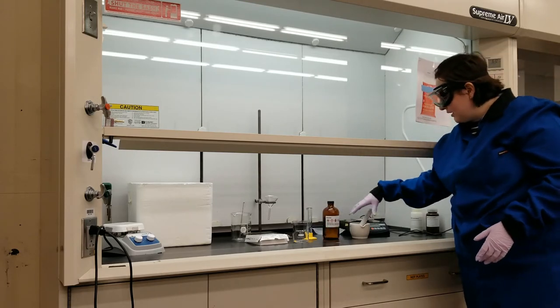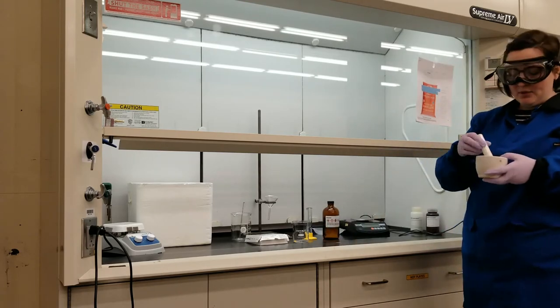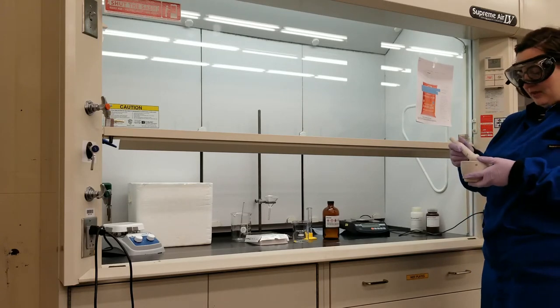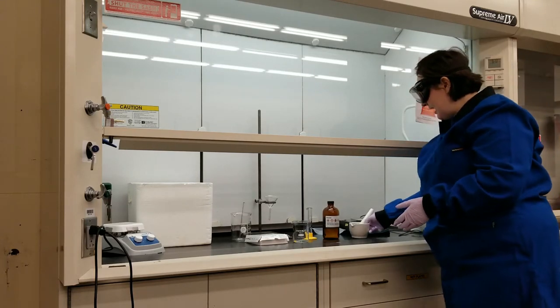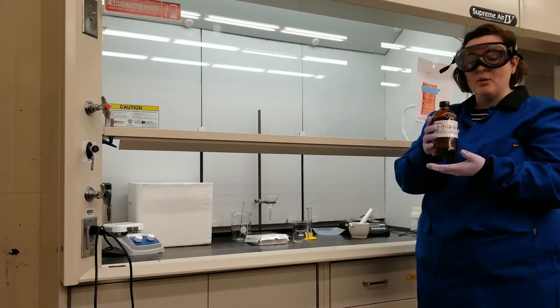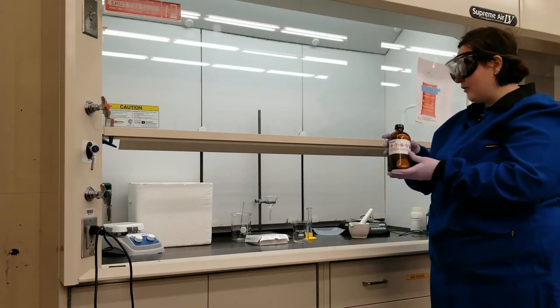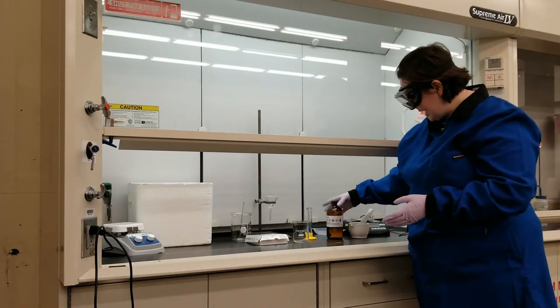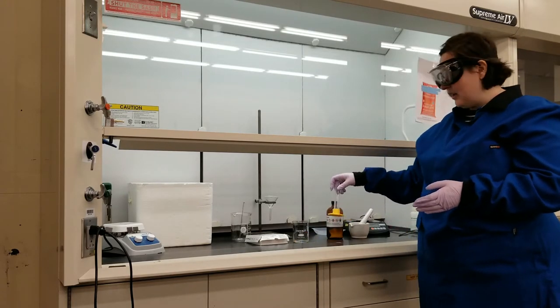I'm going to want to increase the surface area of my chips so that they can interact with my non-polar solvent, so I'm going to use a mortar and pestle, and then I'm going to want a non-polar solvent to extract the fats from the potato chips, so I'm using hexane today, and I'm going to be able to measure it in a graduated cylinder.